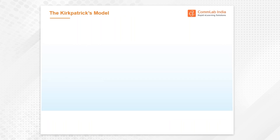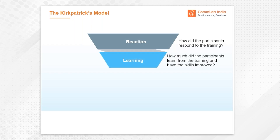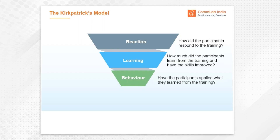We all know about Kirkpatrick's model — the four levels. The first is evaluation at a reaction level: how did the participants respond to the training? Second is about learning — how much did they learn and have their skills improved? Third is about behavior — how did the behavior of the user change after the training? And finally, it is the results, which every organization is interested in.